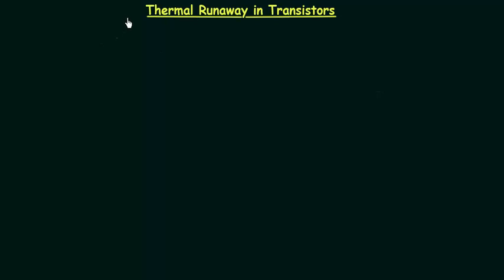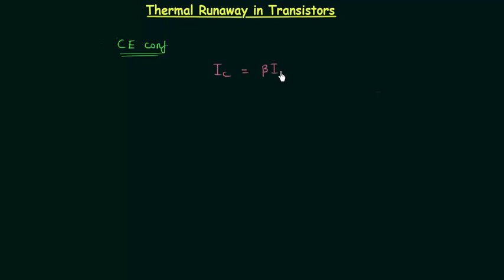In this lecture I will explain thermal runaway in transistors. We generally use common emitter configuration of a transistor, and in case of common emitter configuration the collector current IC is equal to beta times Ib, where Ib is the base current, plus beta plus 1 times ICBO.